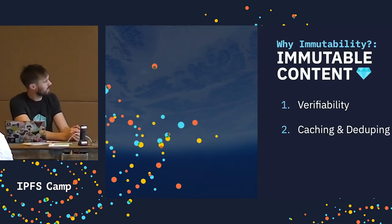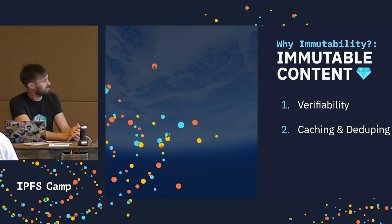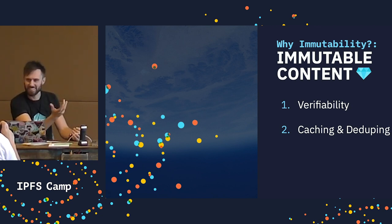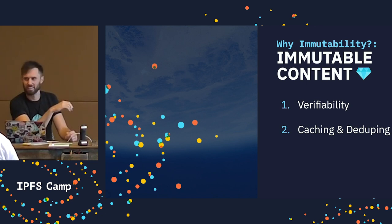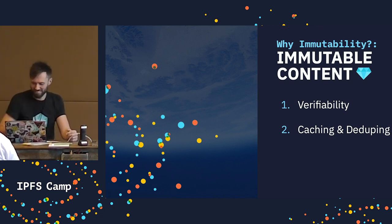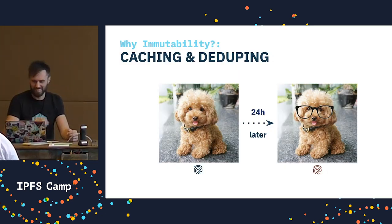Caching and deduping: immutable content completely solves the caching problem. Since the data is never going to change, the cache rules are cache this forever. So back to our example, if we were using content addressing, our cute poodle has a specific address derived from its content — the hash.